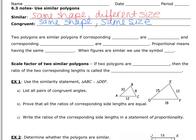Two polygons are similar polygons if corresponding angles are congruent and corresponding side lengths are proportional. If polygons are similar, their angle measurements are going to be exactly the same. However, their side lengths are not going to be the same — they're going to be proportional. Proportional means that when you set up the ratio and reduce it, they're going to have the same exact ratio.